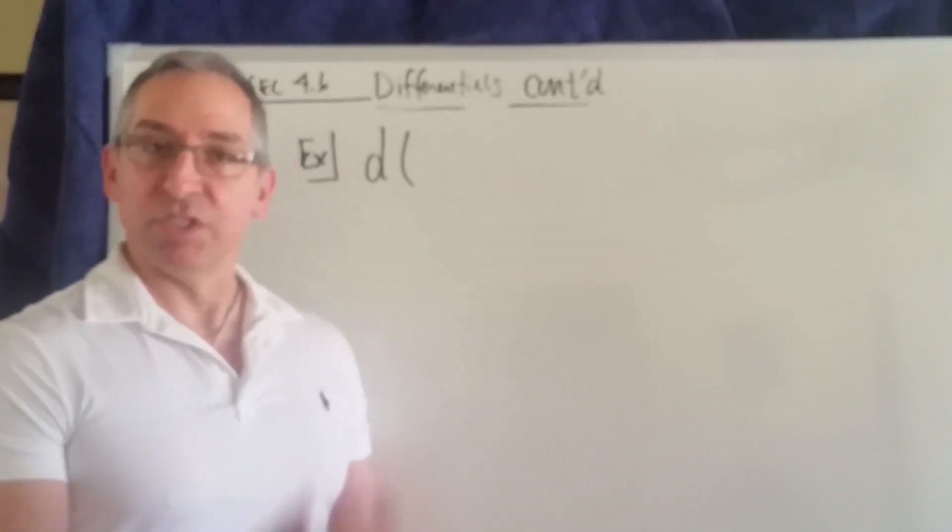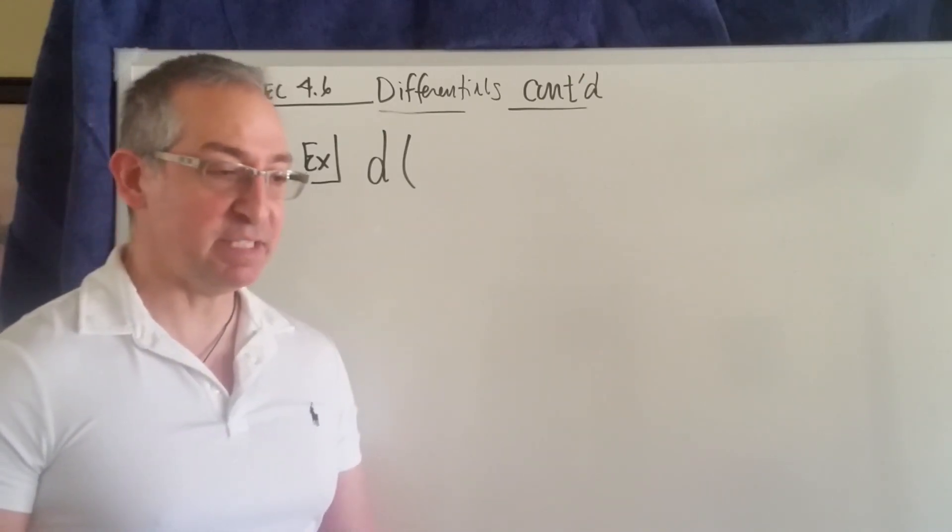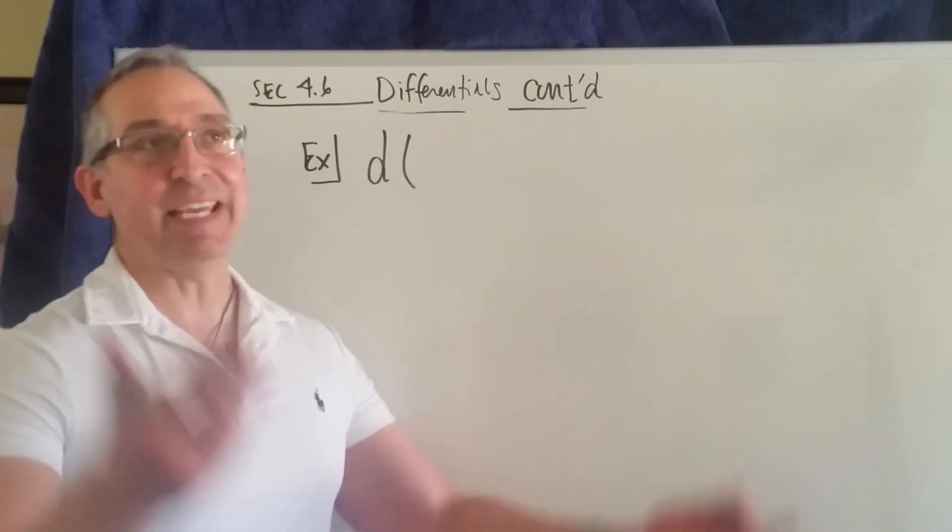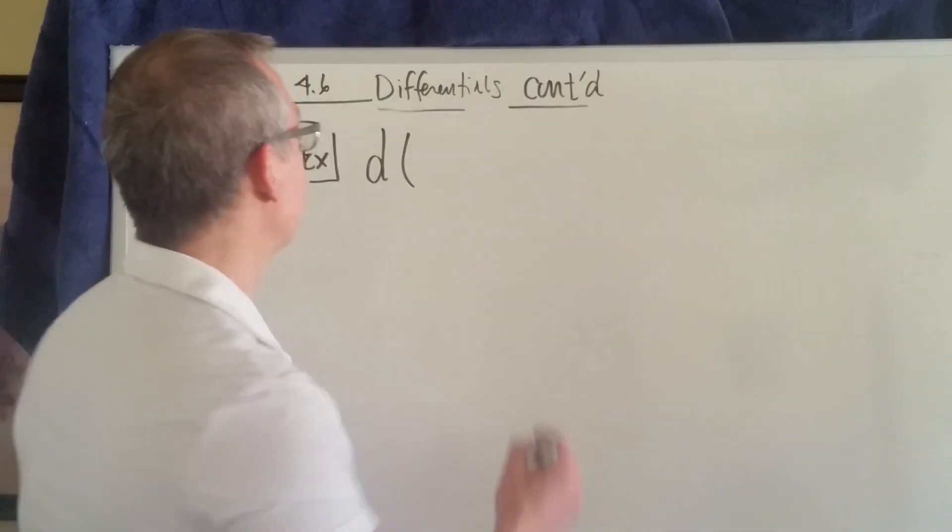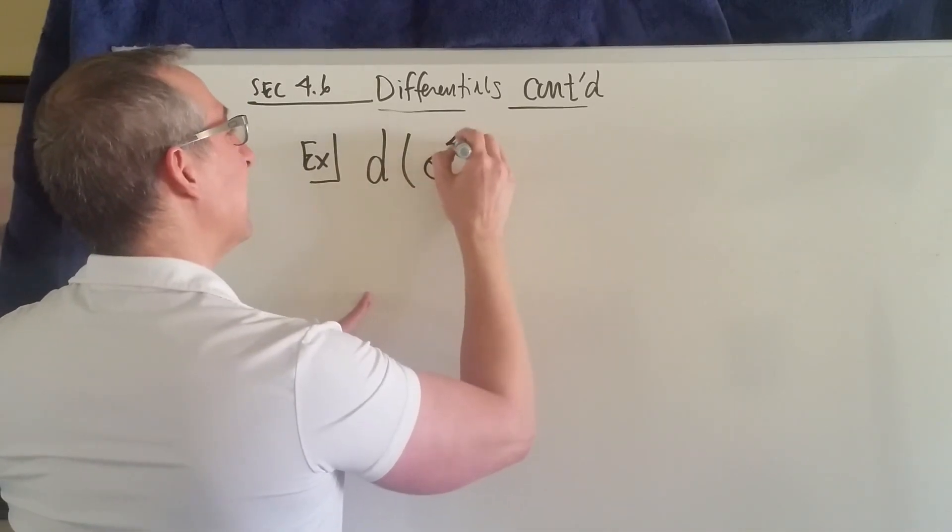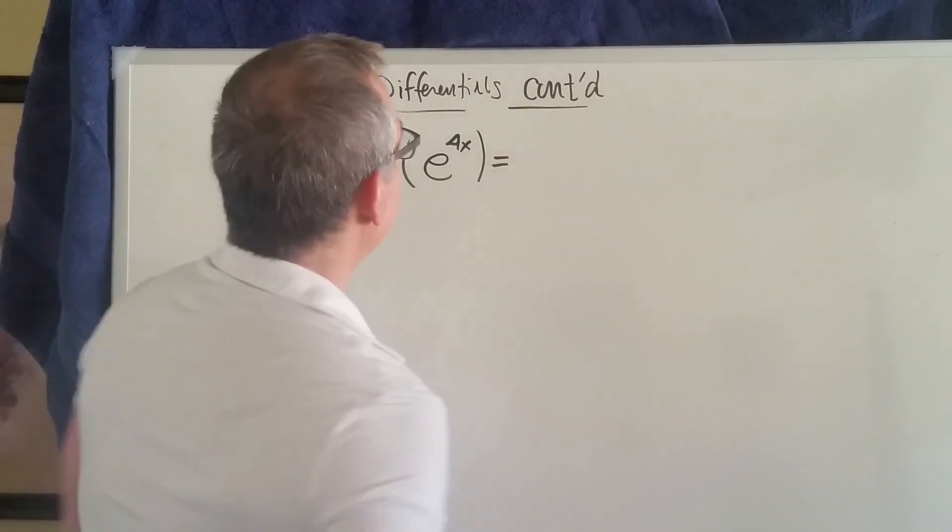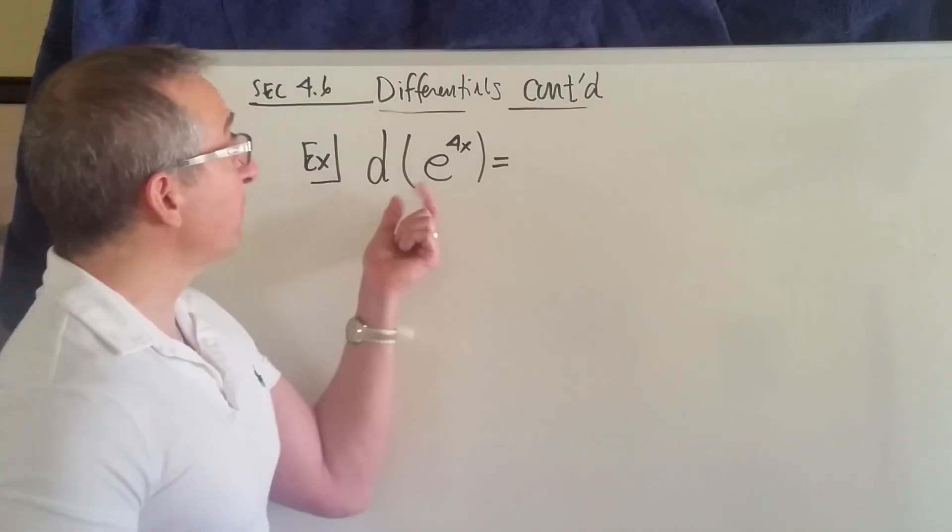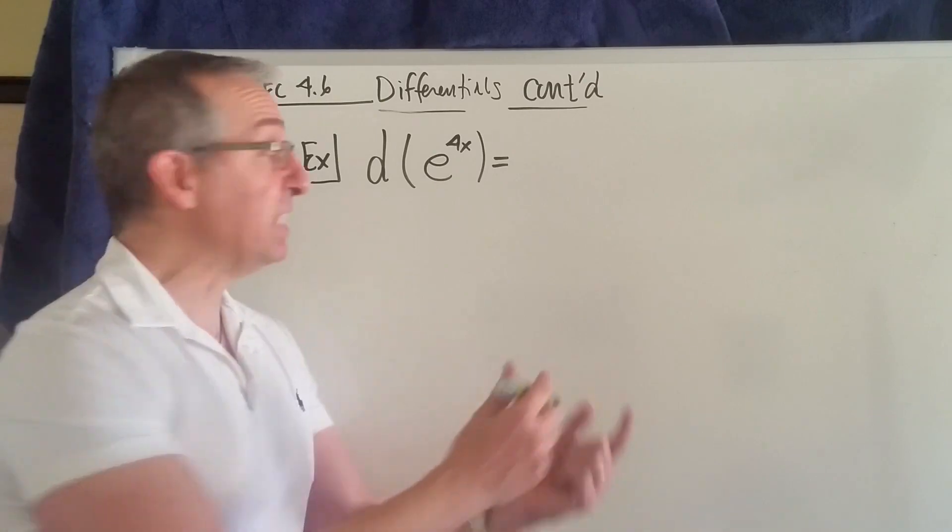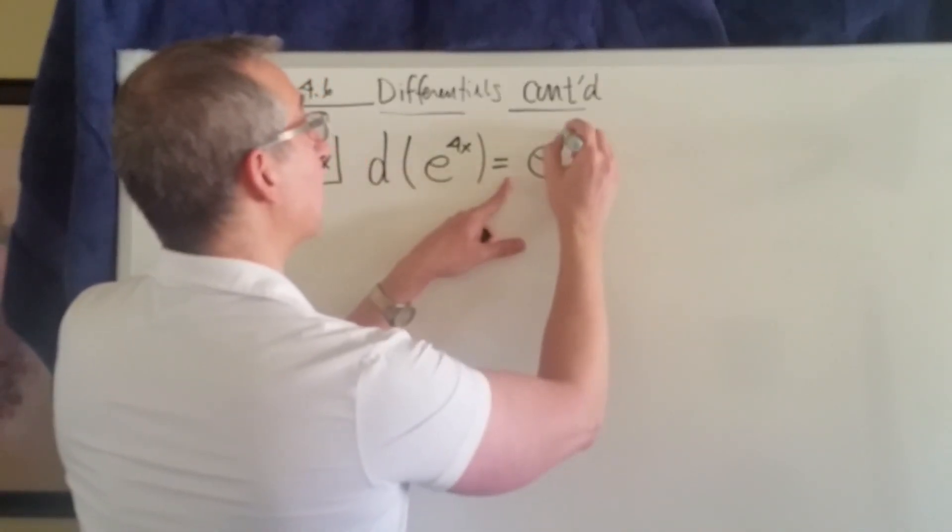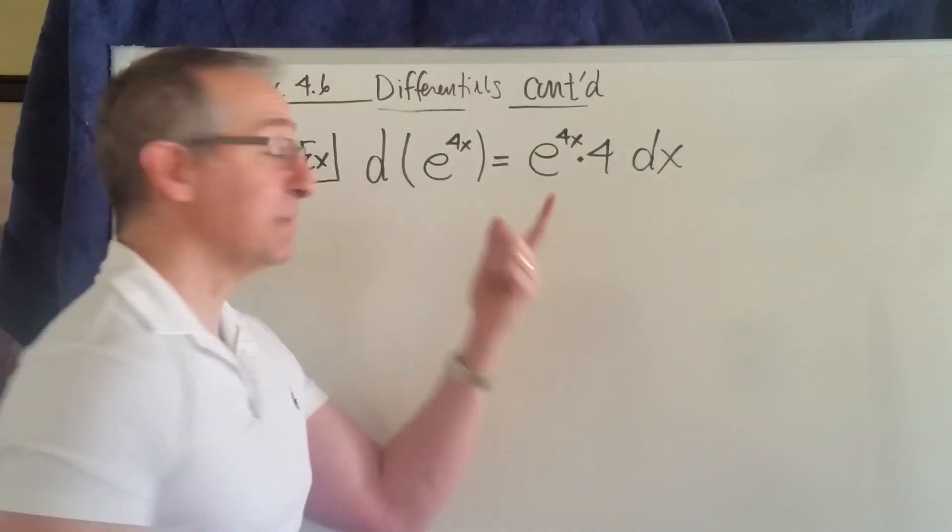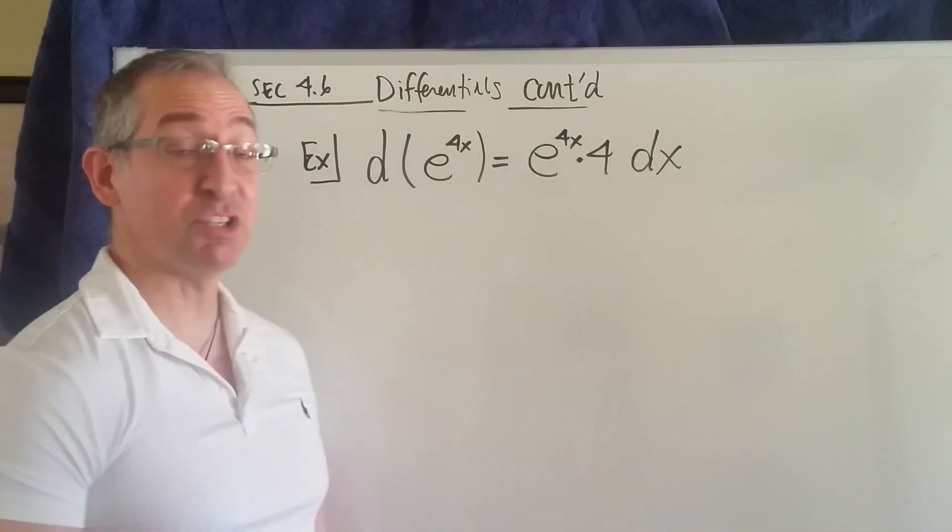First, just one more example similar to the one that we just did. Let's say that we wanted to find the differential of some function, let's say sine squared of x. I'll make it a little easier just to get through it. So according to what we established just a moment ago, the differential of the function e to the 4x is the derivative of e to the 4x times dx. And that's your answer.